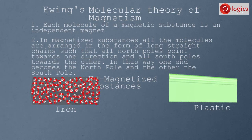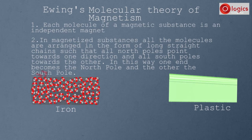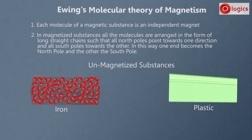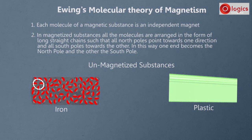Inside the iron bar, molecules are not arranged in long straight lines — they are arranged irregularly. One molecule's north pole may point in one direction while another molecule's north and south poles point in completely different directions. Yet both molecules are still attracted to each other. All these molecules are in different directions and attracted to each other, forming closed chains where every molecule is attracted to some other molecule.